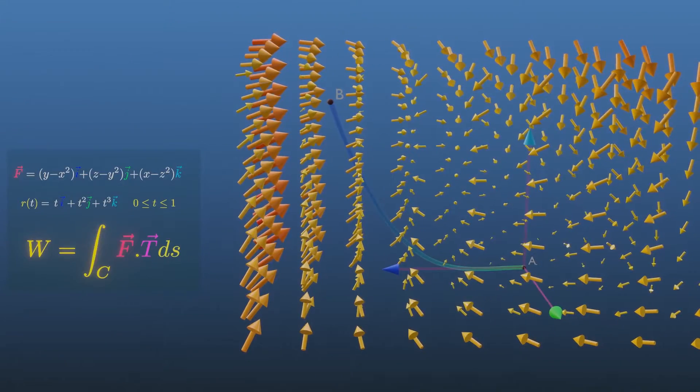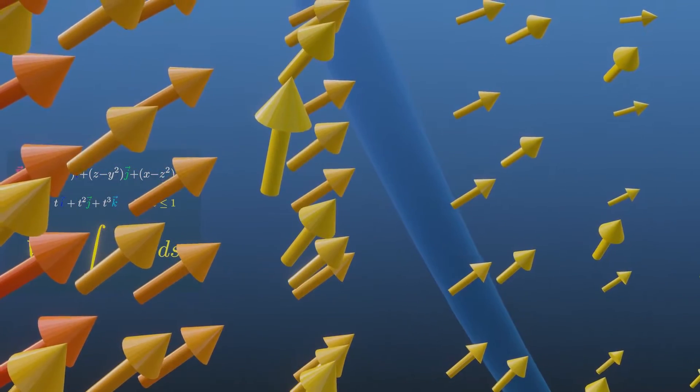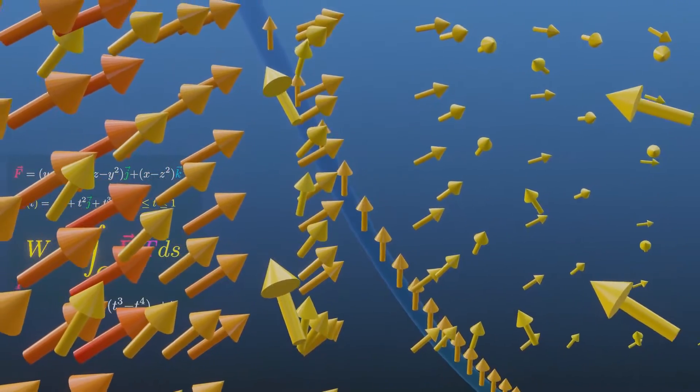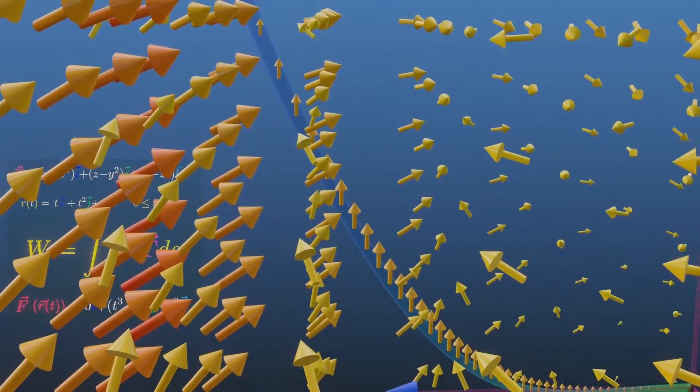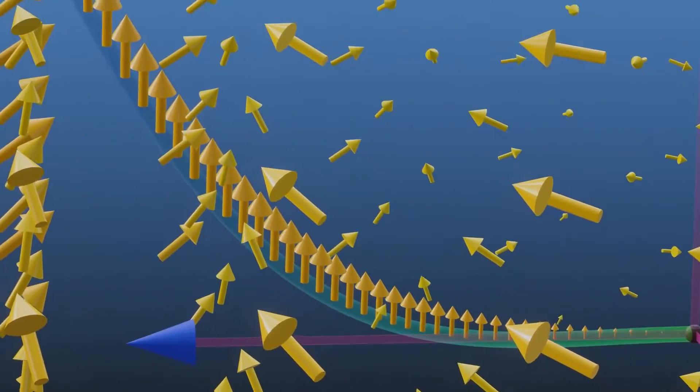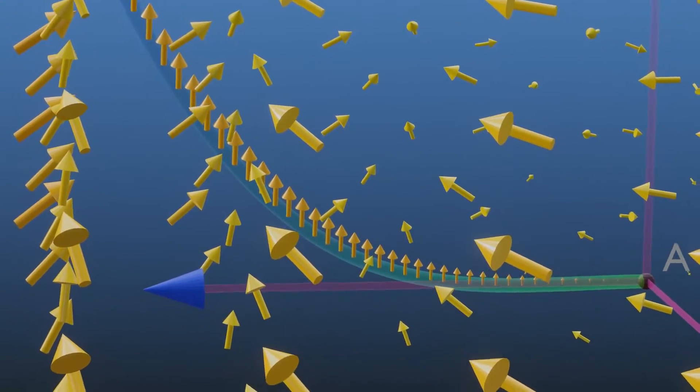Now, we need to calculate the force vectors acting on every point of the curve. Let's evaluate the force field only on the curve. Notice how its magnitude is randomly distributed along the length of the curve.